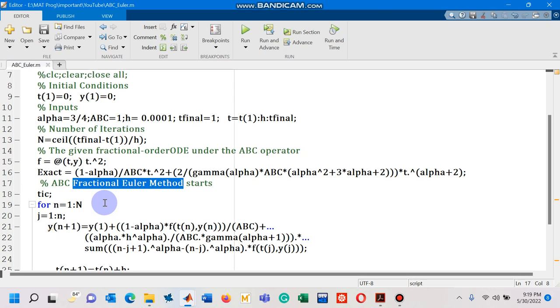So, by this behavior here, it suggests that the behavior suggests that the fractional Euler method under ABC operator is also a first order accurate method.